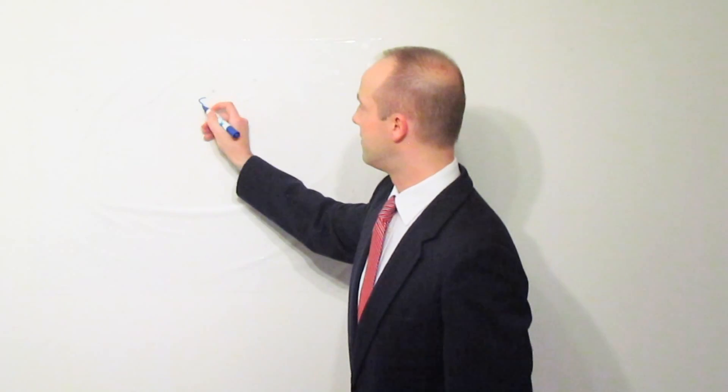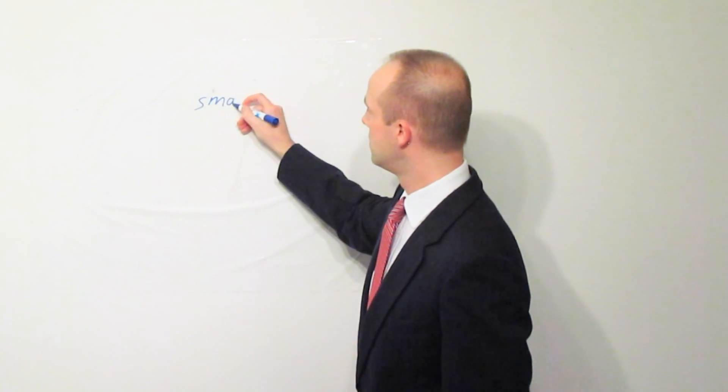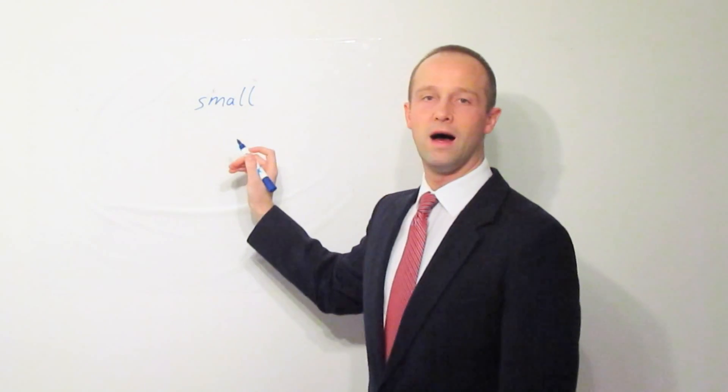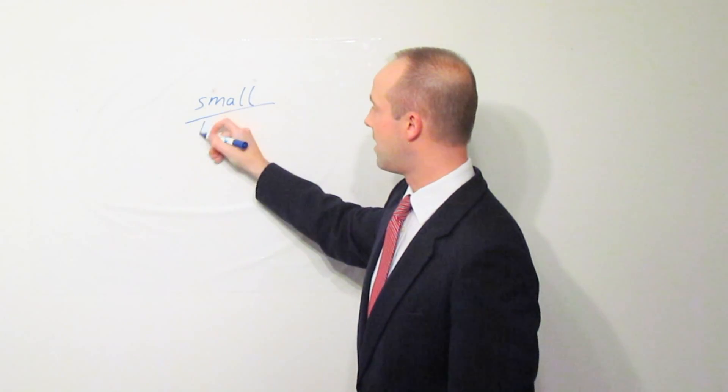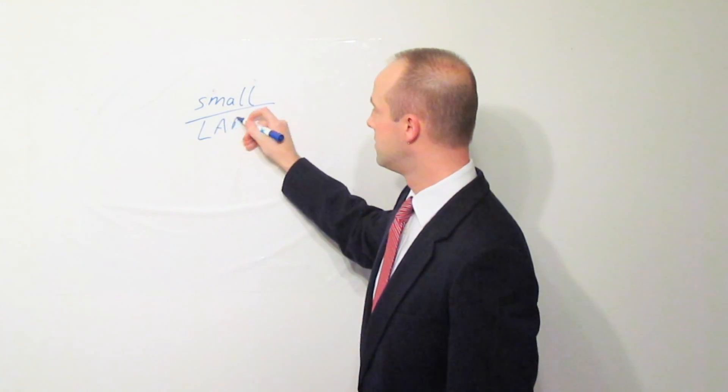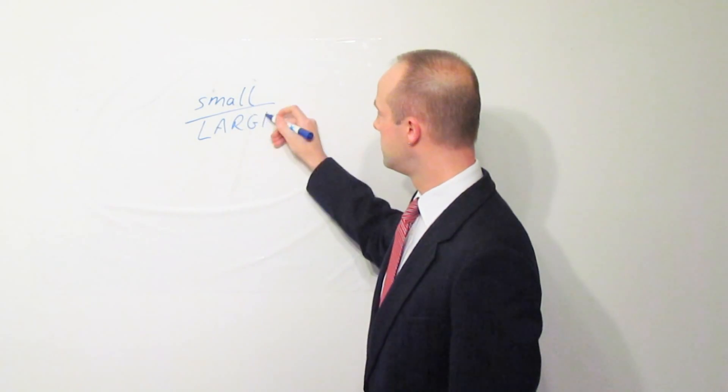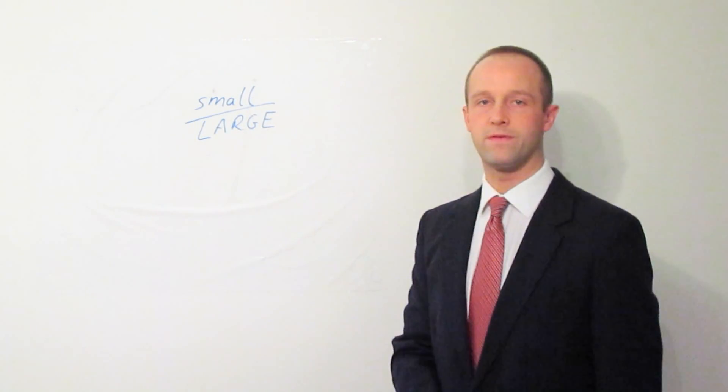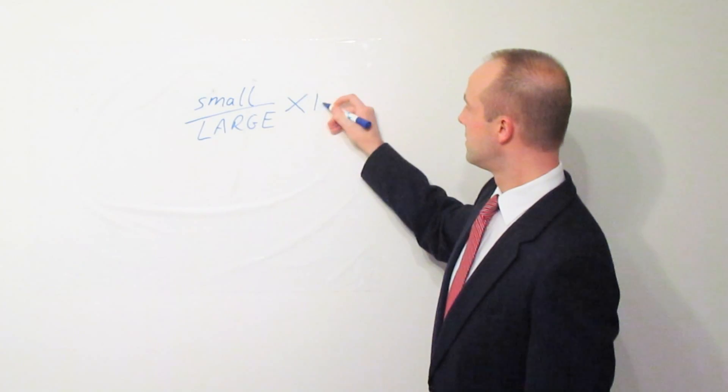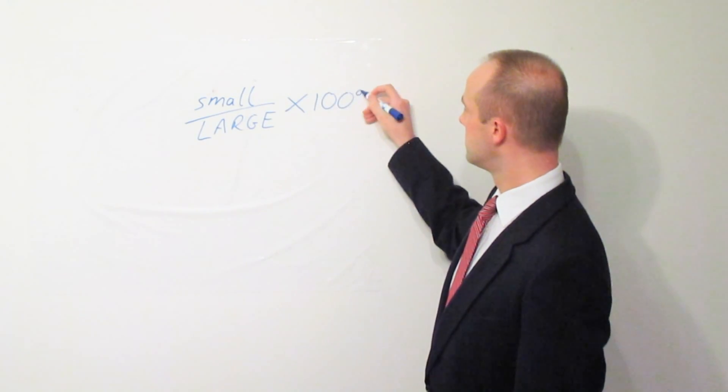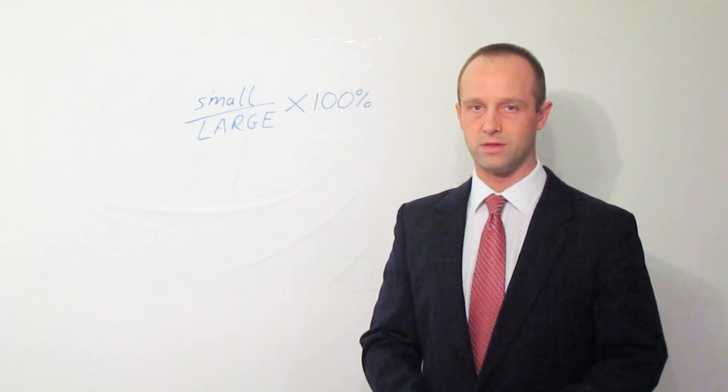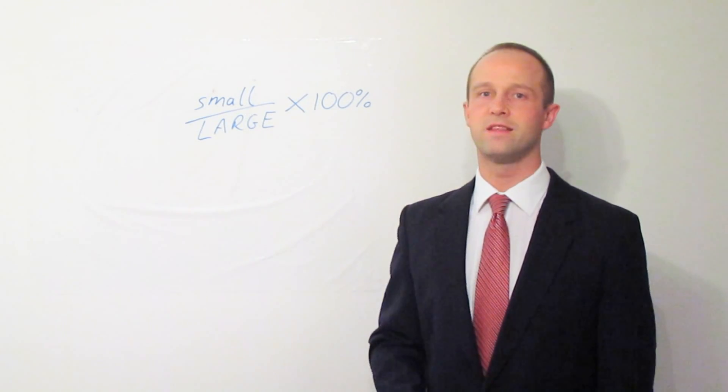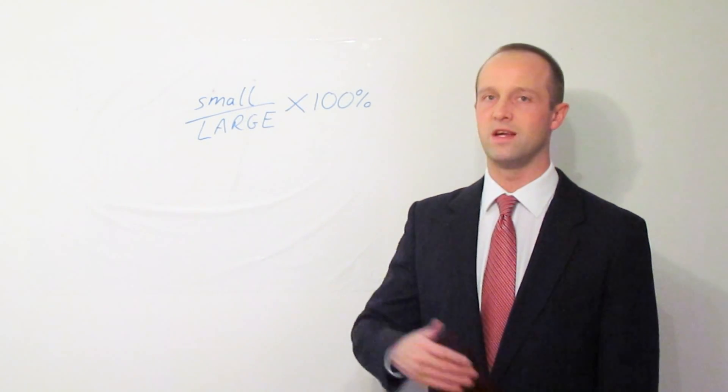Quickly recapping how you work out percentage, you're going to have a small number, and that's going to be on the top of your fraction, and you're going to divide that by a large number on the bottom of your fraction, and then multiply the whole lot by 100 to turn it into a percentage. This should come out as a number between 0 and 100.